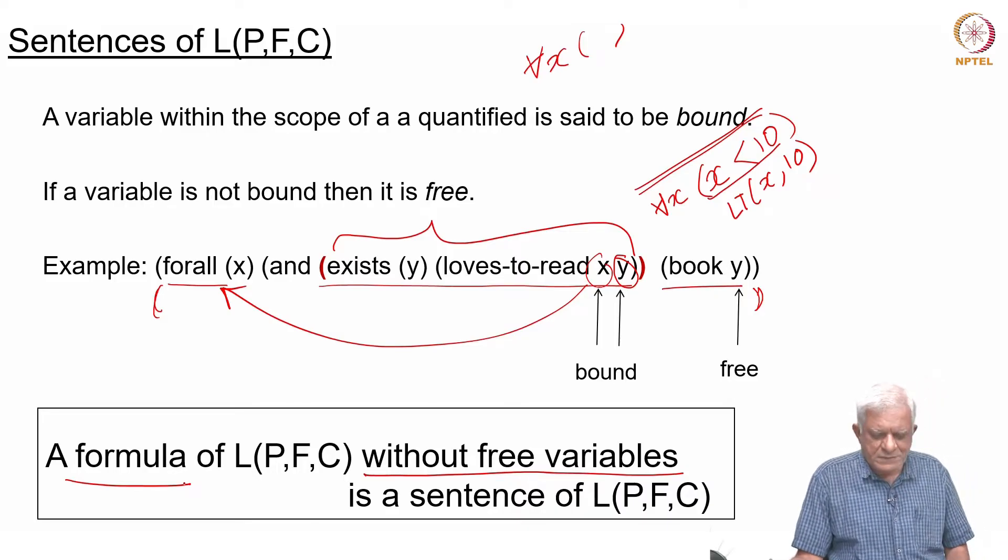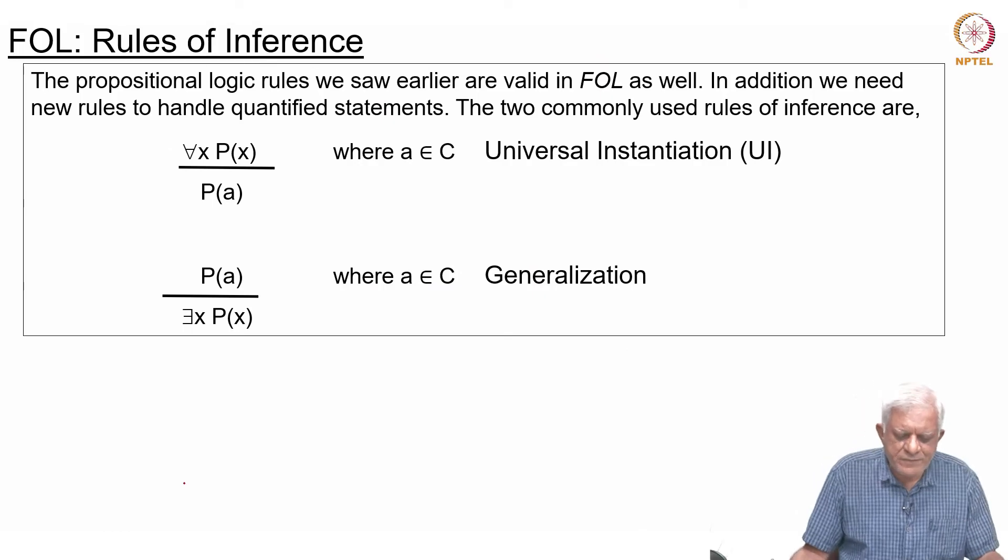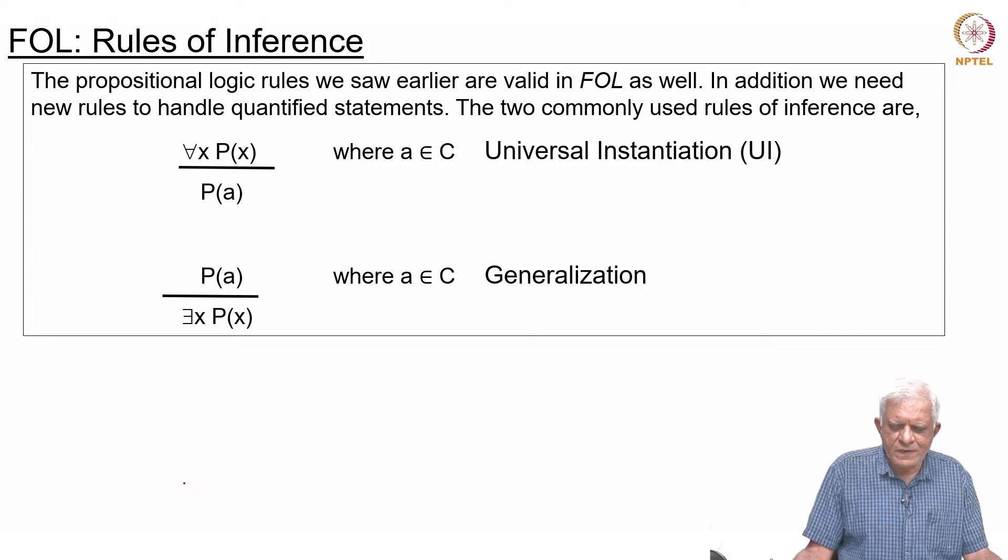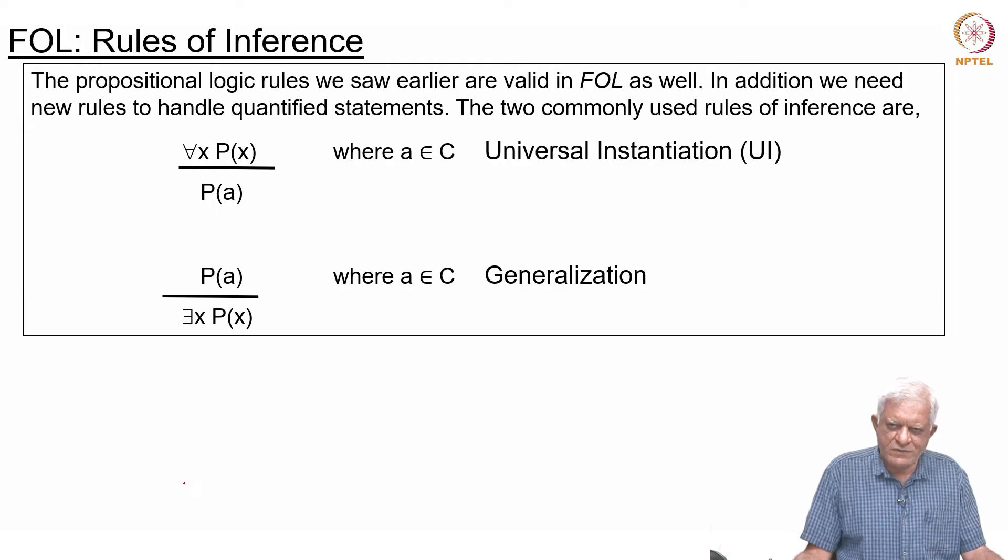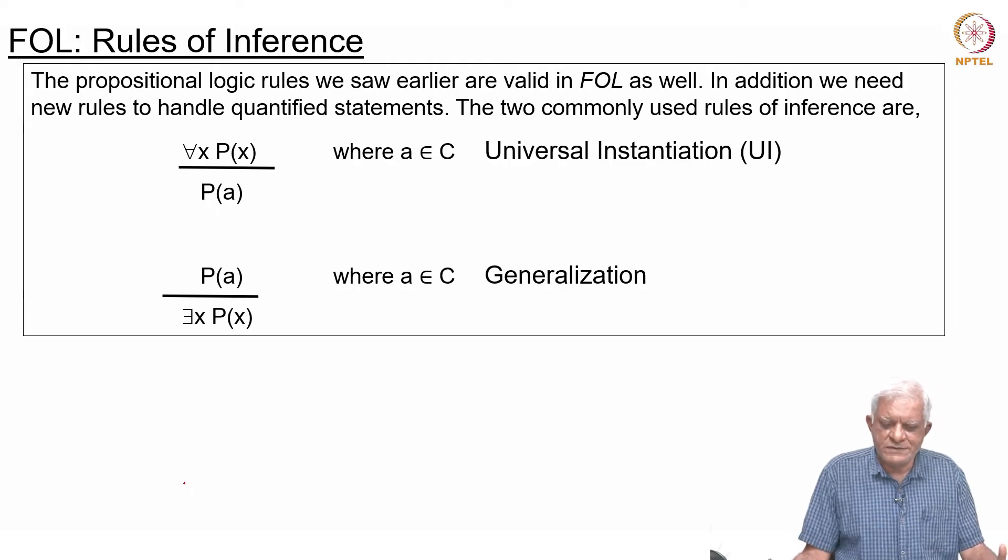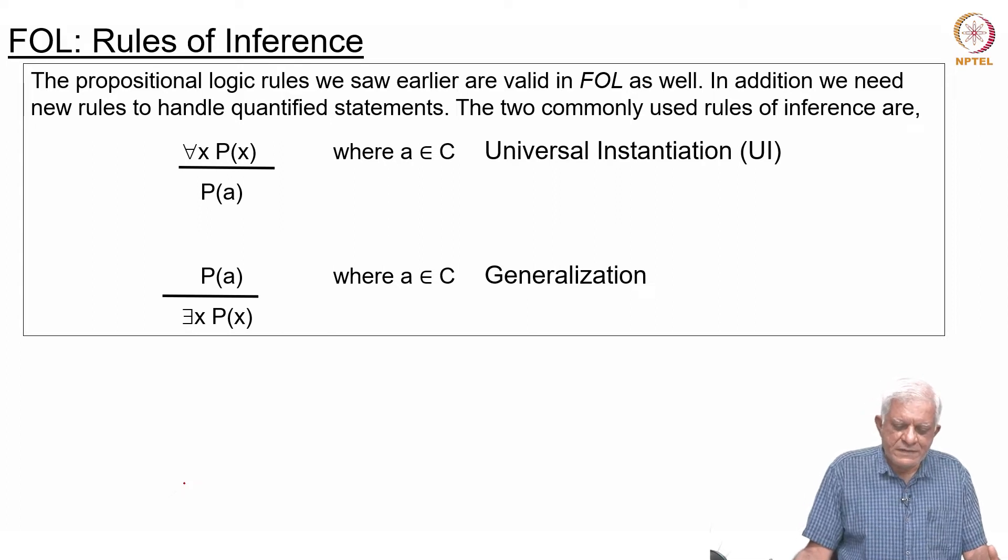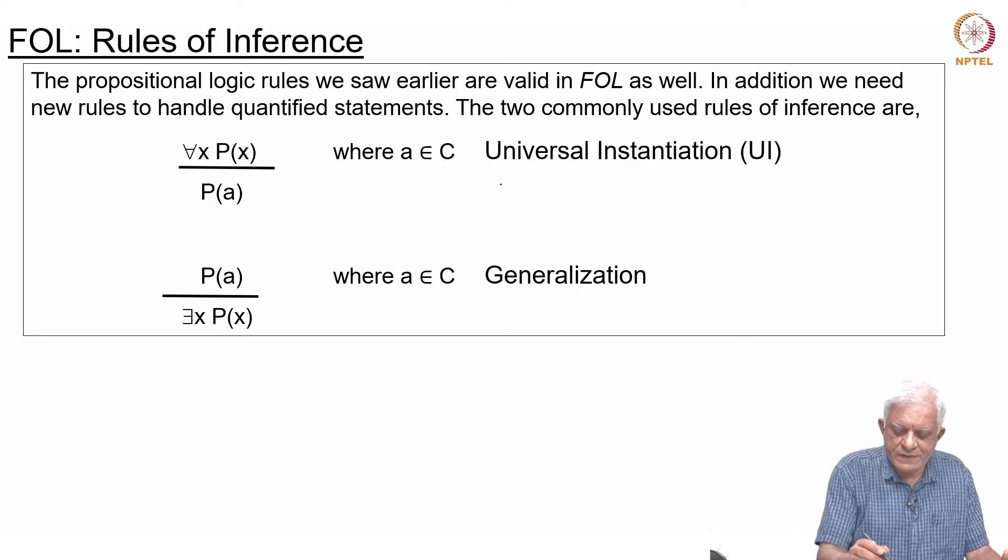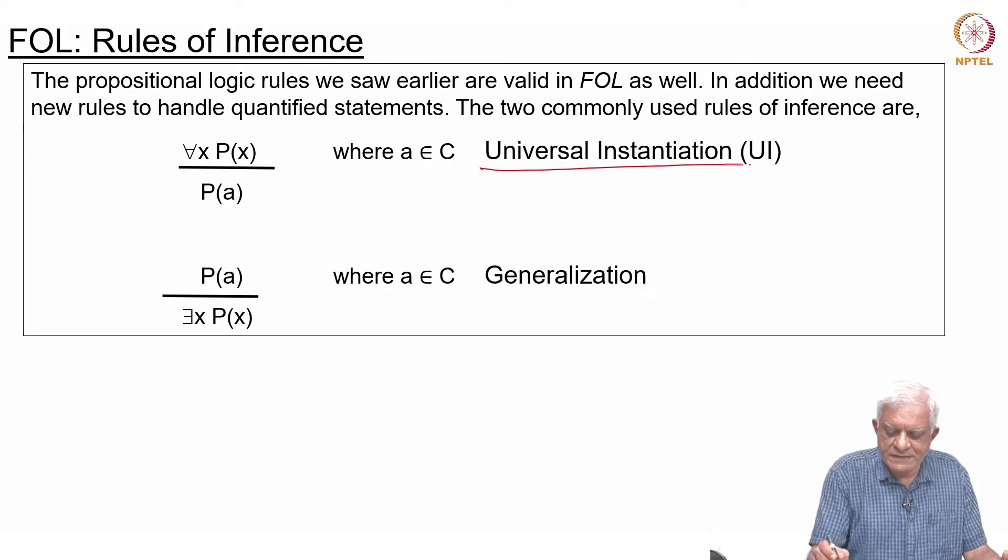Now let us move on. Because of the fact that we have these new quantifiers—for all x P(x) and there exists x P(x)—we need to introduce two new rules of inference essentially. The most common rules of inference that we use: the first one is called Universal Instantiation, we will use the term UI for that.